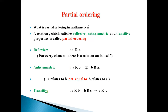Let us see all properties. Reflexive: for every element A, there is a relation onto itself. Antisymmetric: A relates to B but not equal to B relates to A, because it is antisymmetric. If it is symmetric, A relates to B and B relates to A. Since it is antisymmetric, A relates to B but B does not relate to A. Transitive: A relates to B, B relates to C, so A relates to C.